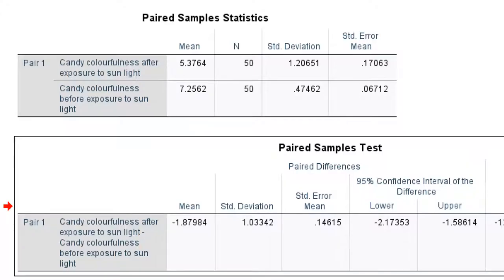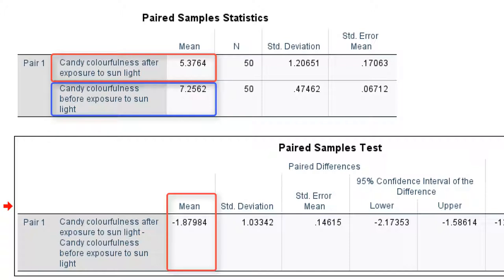Our second test is a paired-samples t-test. Let us compare candy colorfulness after exposure to sunlight to colorfulness before exposure to sunlight. Colorfulness has clearly gone down in our sample from 7.3 to about 5.4. So there is a mean difference of about 1.9 in our sample. This difference is reported in the column mean in the paired-samples test table.